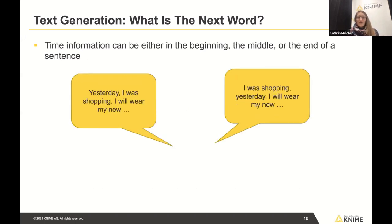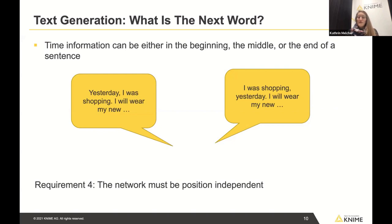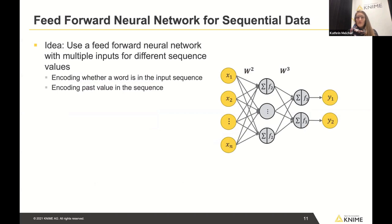A final challenge is that information can appear in different parts of a sequence. The word 'yesterday,' which encodes time information, could be at the beginning, middle, or end of a sequence. We want the network to recognize 'yesterday' as time information regardless of where it appears in training. So the network should be position-independent — recognizing the same information no matter where it occurs in the sequence.